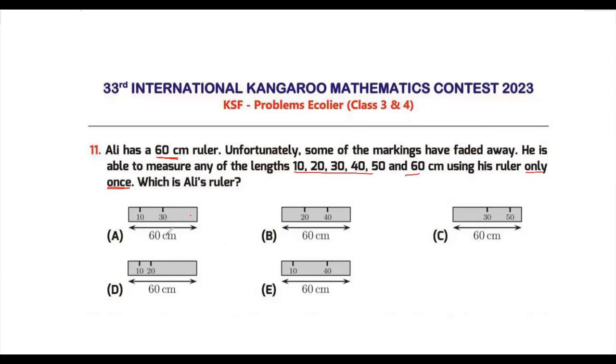Which one is Ali's ruler? Now let's just start. Whenever you have a question like this, let's use the method of elimination and write down these measurements. For all these rulers, 60 centimeters is already given, so 60 centimeter is something I need not measure. Now for option A, which measurements can I do? I can do 60, I can do 10, and I can do 30 which is visible here.